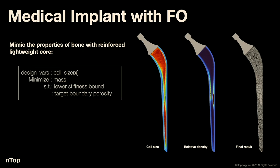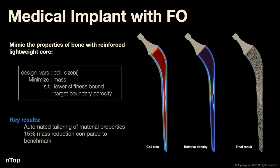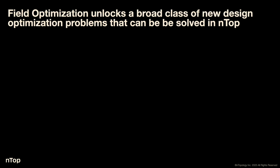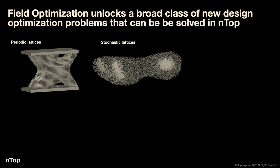Field optimization unlocks a huge class of new design optimization problems in NTOP. This includes periodic lattices — repeating structures in space — stochastic lattices like Voronoi foams, multi-phase lattices with multiple different unit cell types in space, user-defined manufacturing constraints, shell and infill structures, and composite materials.